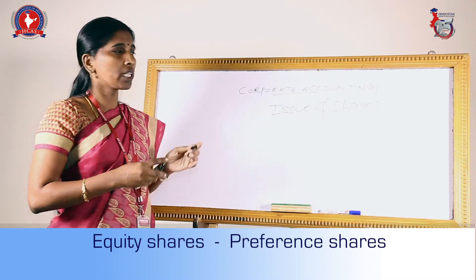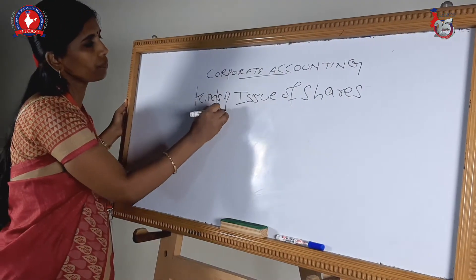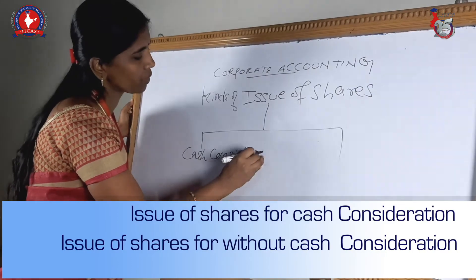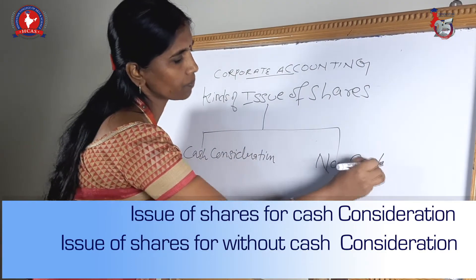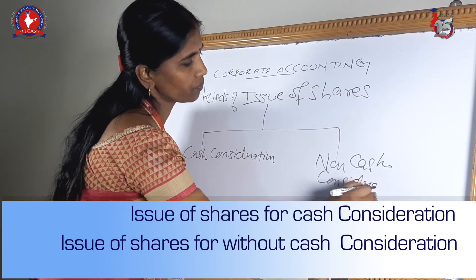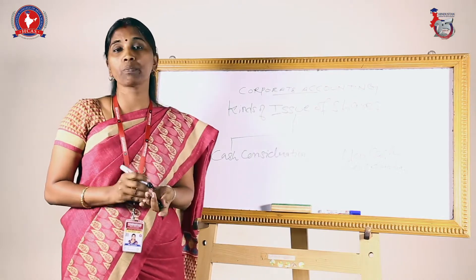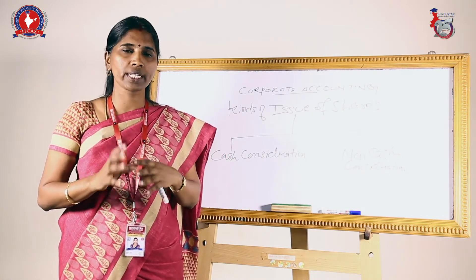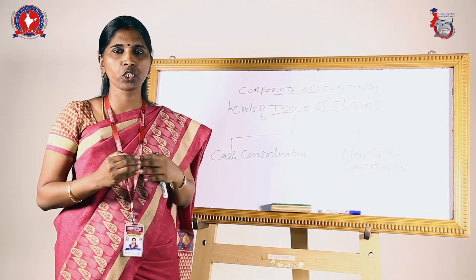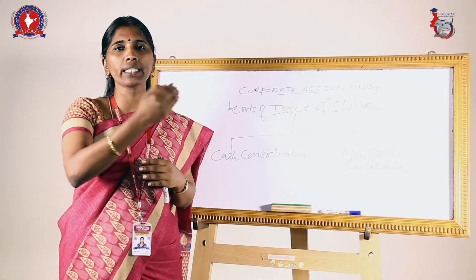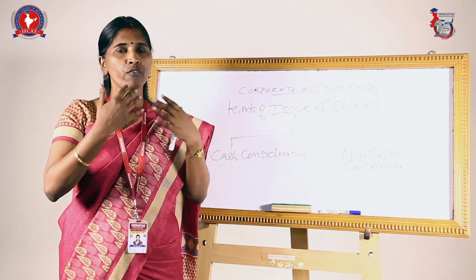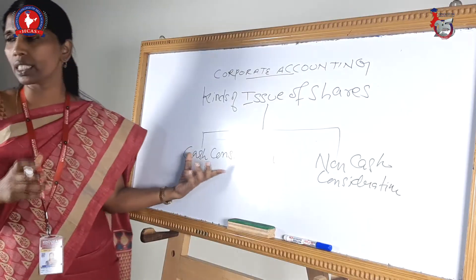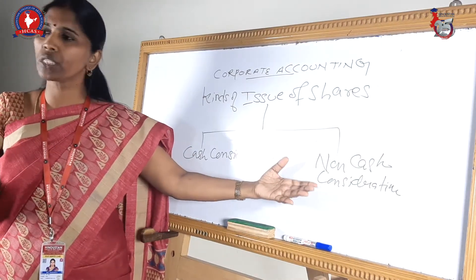When we go for the issue of shares, there are two kinds. One is shares issued for cash consideration, and another is non-cash consideration. Consideration means something in return. For example, if I go to a shop and purchase a book, I pay money and get the book — the money is consideration for the shopkeeper and the book is consideration for me. So shares can be issued for cash consideration or non-cash consideration.